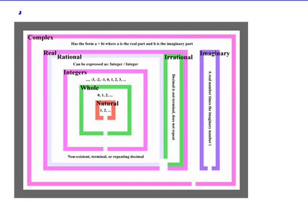Here's a Venn diagram — it doesn't look like it because it doesn't have ovals, but it is. It's a Venn diagram of the types of numbers, so let's take a look at what's going on here.